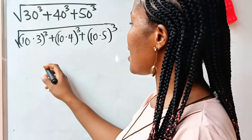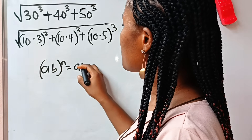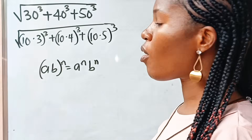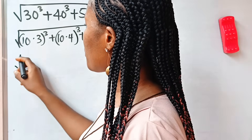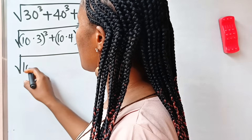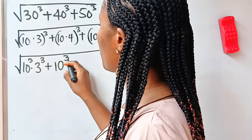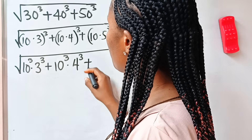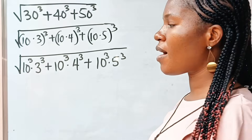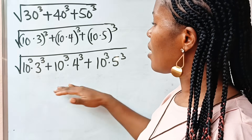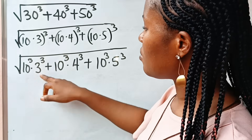Now let's have fun together. Remember that a multiplied by b raised to the power of n is equal to a to the power of n multiplied by b to the power of n. So that means we can write this as the square root of 10 to the power of 3 multiplied by 3 to the power of 3, plus 10 to the power of 3 multiplied by 4 to the power of 3, plus 10 to the power of 3 multiplied by 5 to the power of 3. Now at this juncture, we can factorize 10 to the power of 3 out.